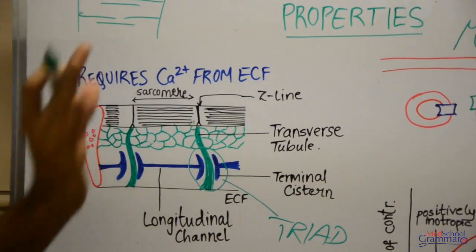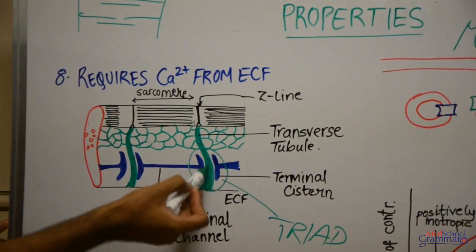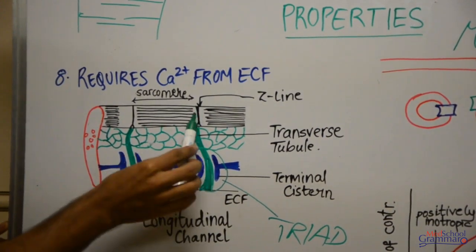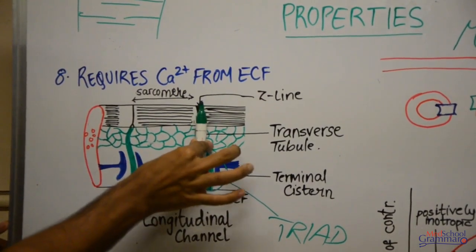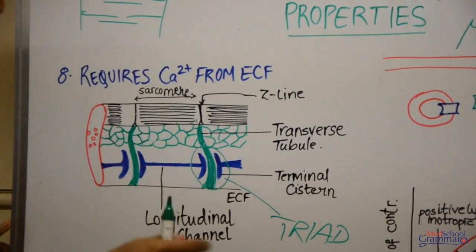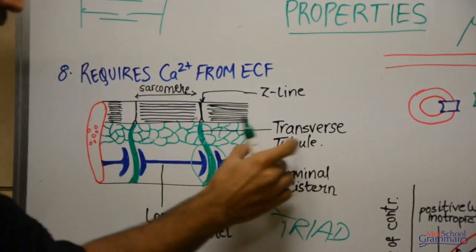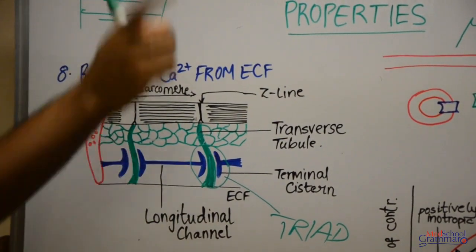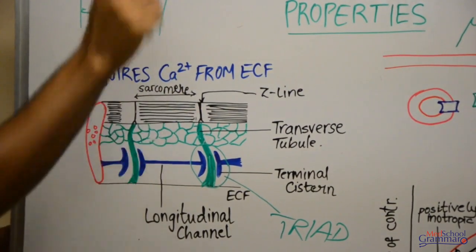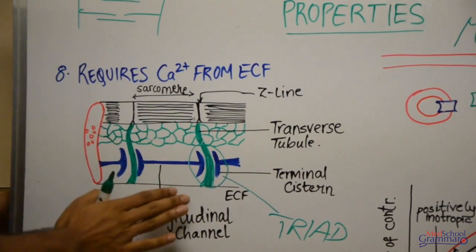A similar structure exists in skeletal muscles, but there is a difference: in cardiac muscle, the T-tubule lies in the same plane as the Z line. Per sarcomere there is only one T-tubule in cardiac muscle. In skeletal muscle, by contrast, there are two T-tubules per sarcomere. So in cardiac muscle there is one transverse tubule per sarcomere.